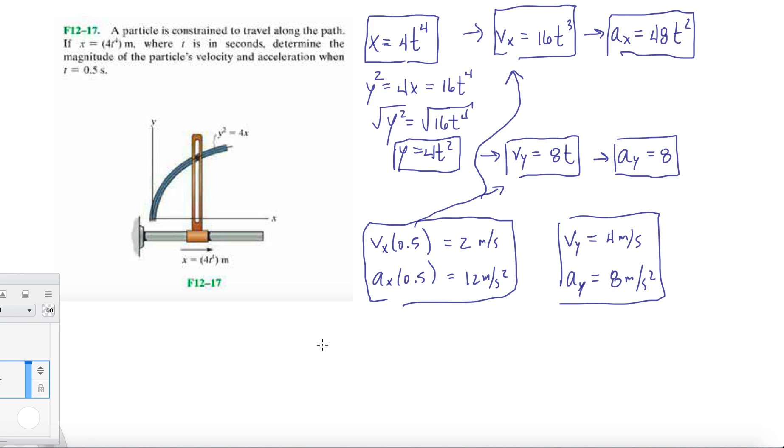Remember this is going to be my v_x component squared plus my y component squared. Those are already all evaluated at 0.5 seconds. We get 4 plus 16, so that's not a nice number but we get 4.47 meters per second.